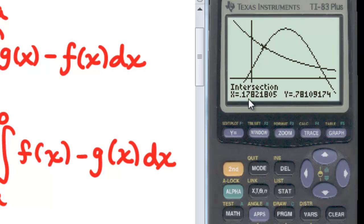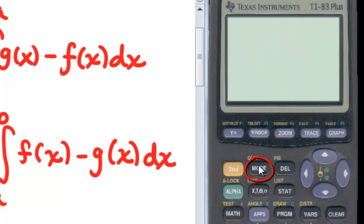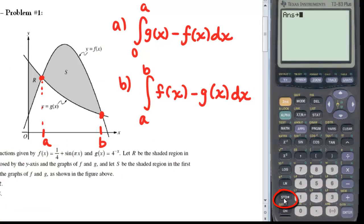On the bottom of your screen, you'll see the intersection point displayed. Now let's go to our home screen by hitting second and the mode key to quit. Let's store that value into one of our letters. I'm going to hit the store key and the alpha key, and I'm going to select A and hit enter, and that will store that intersection point in A.